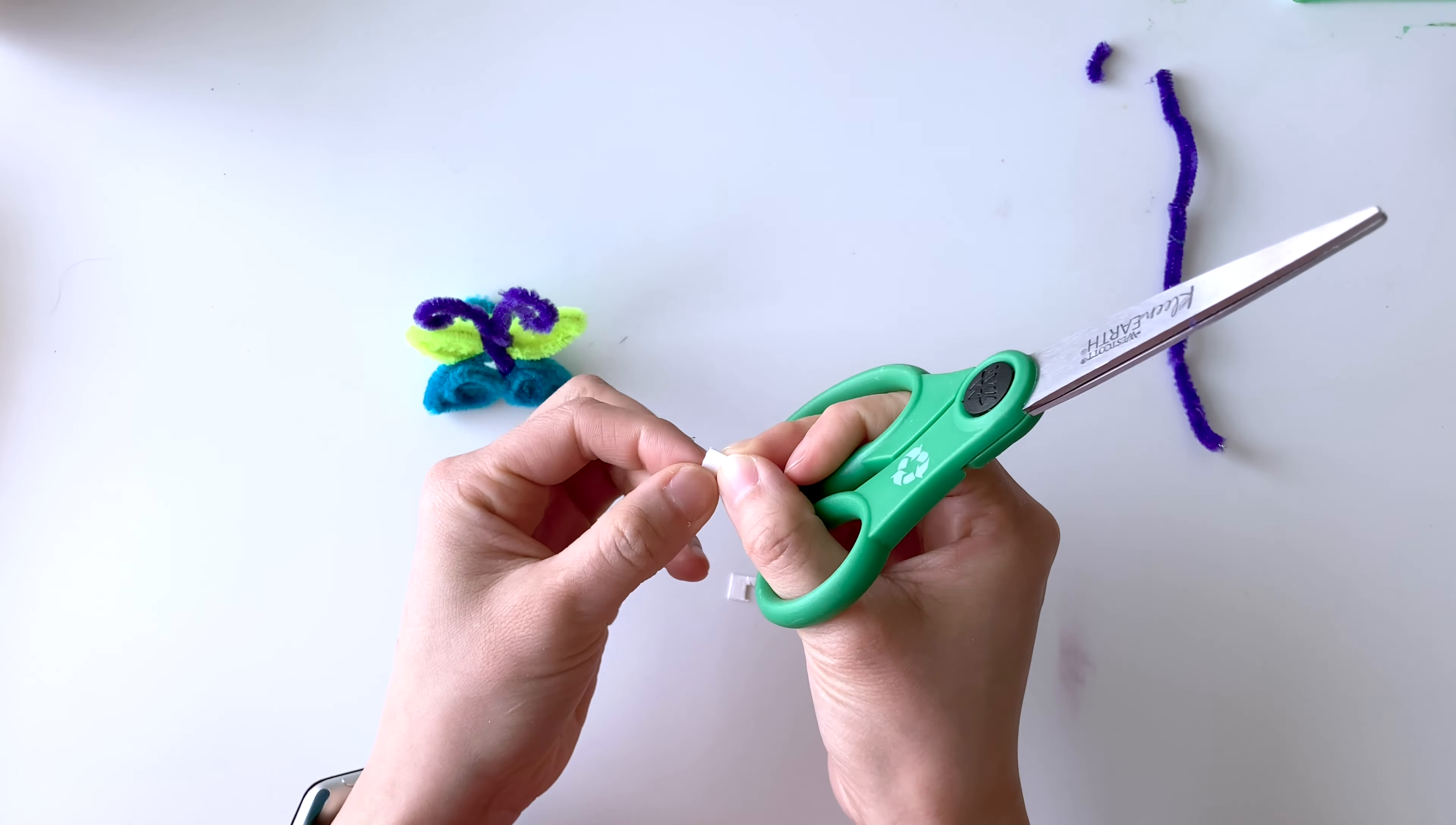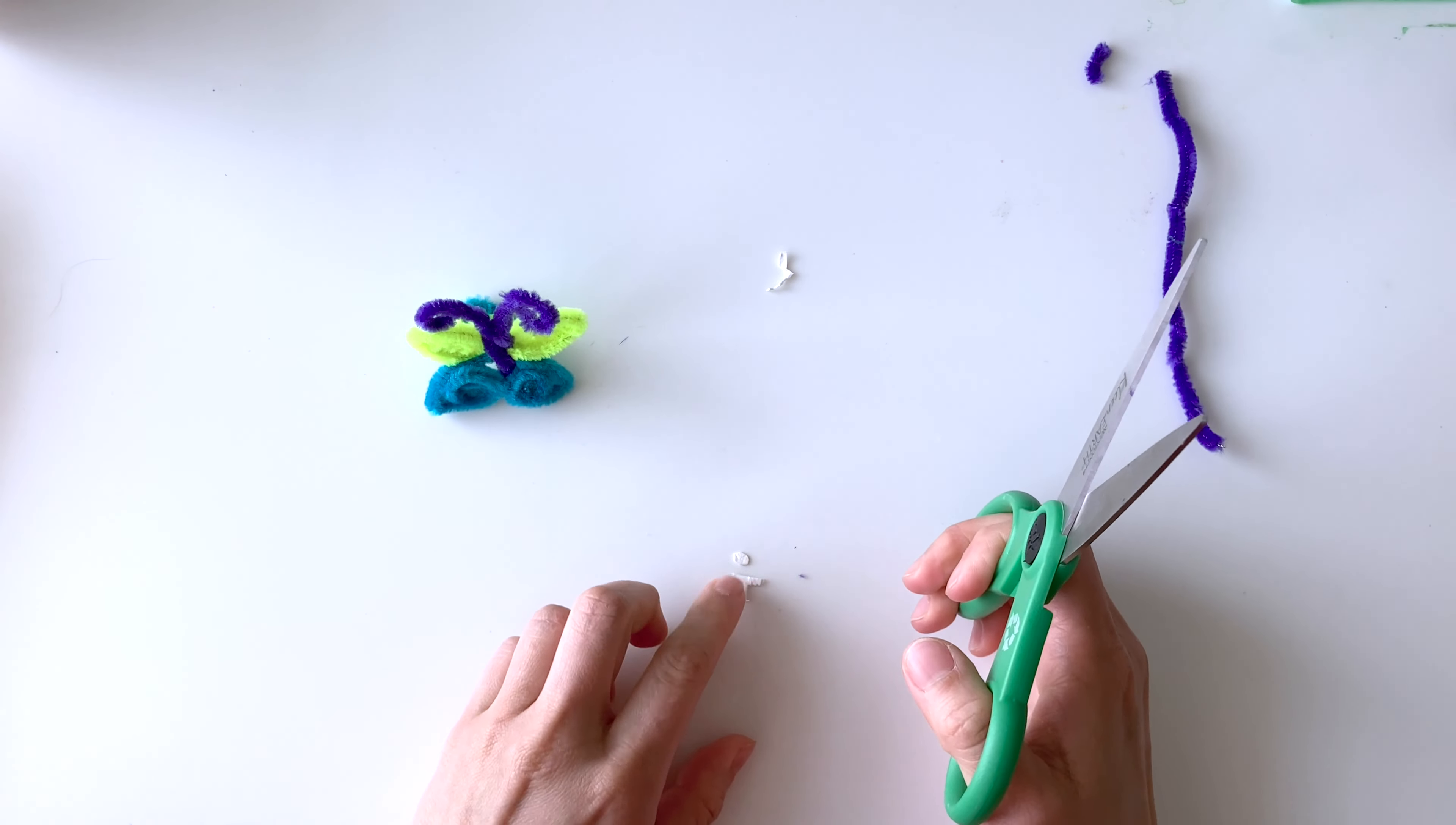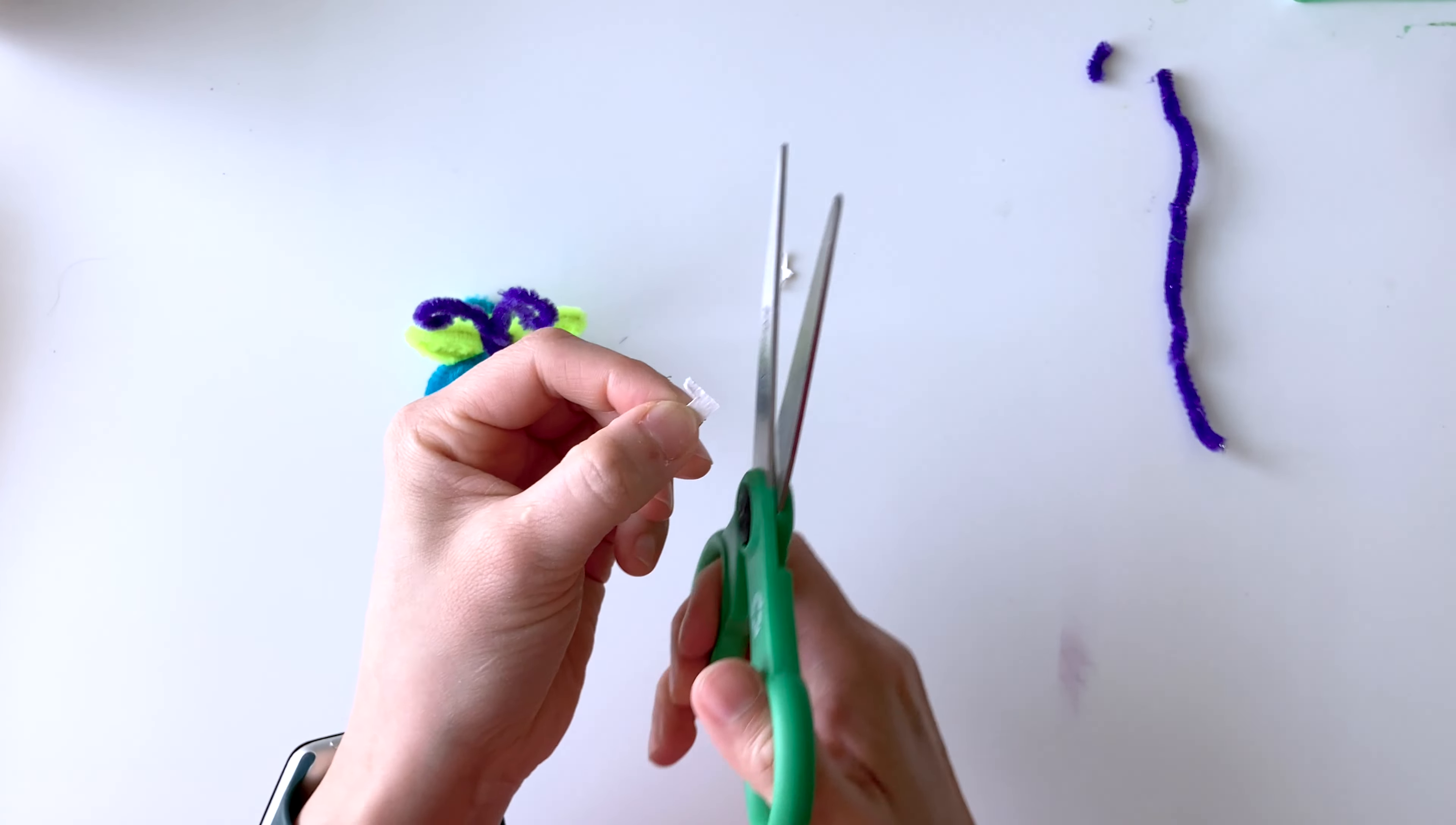And I'm going to cut these into circles. Also, like I mentioned, at this point you could use googly eyes that you pick up at the dollar store, or you can just grab some construction paper and cut some circles out.